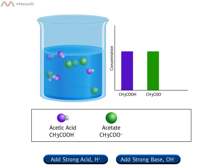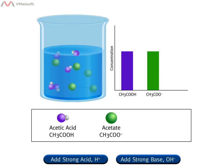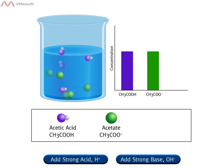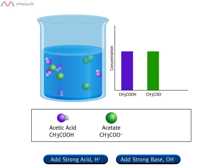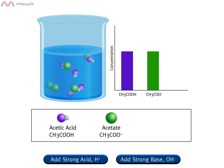A buffer is an aqueous solution containing both a weak acid and a weak base that are a conjugate acid-base pair. The buffer shown contains the weak acid acetic acid and its conjugate base acetate. These species are dissolved in water. Water molecules are not shown in this animation to draw focus to the buffer components.